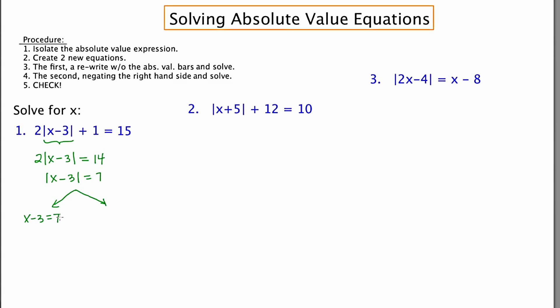is equal to 7, and the second will be x - 3 is equal to -7. Solving each: x equals 10, x equals -4.